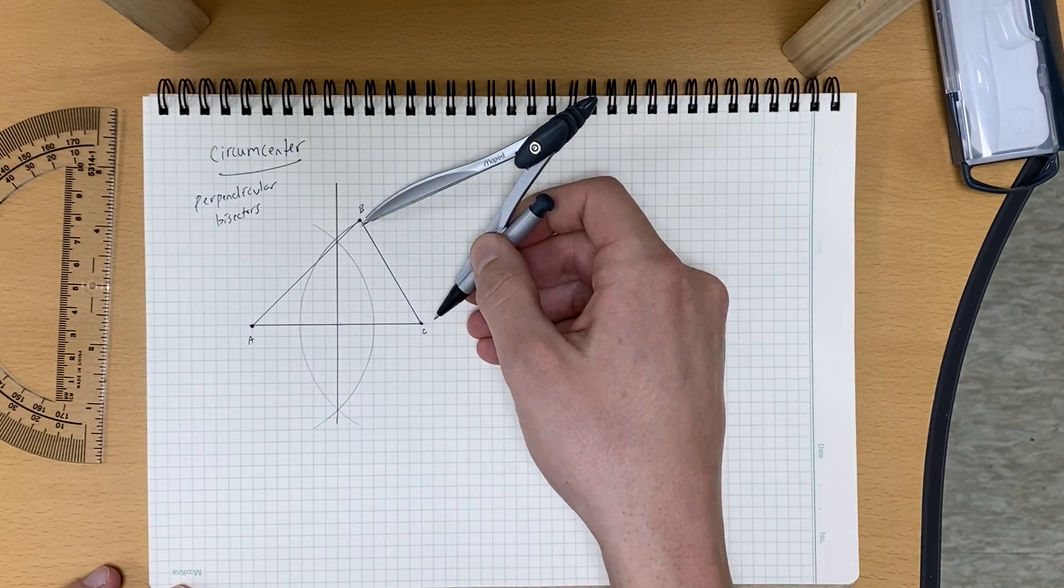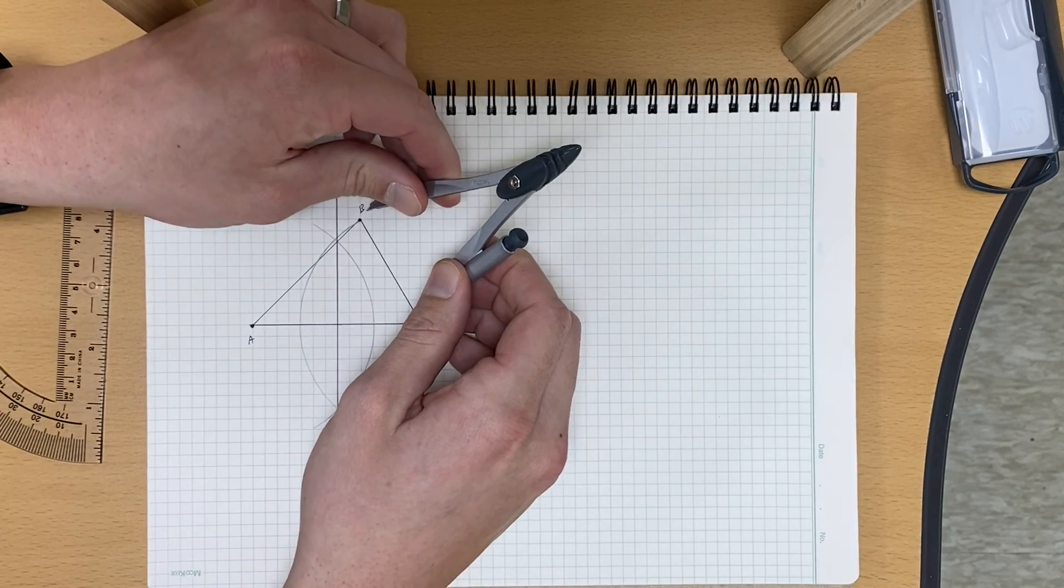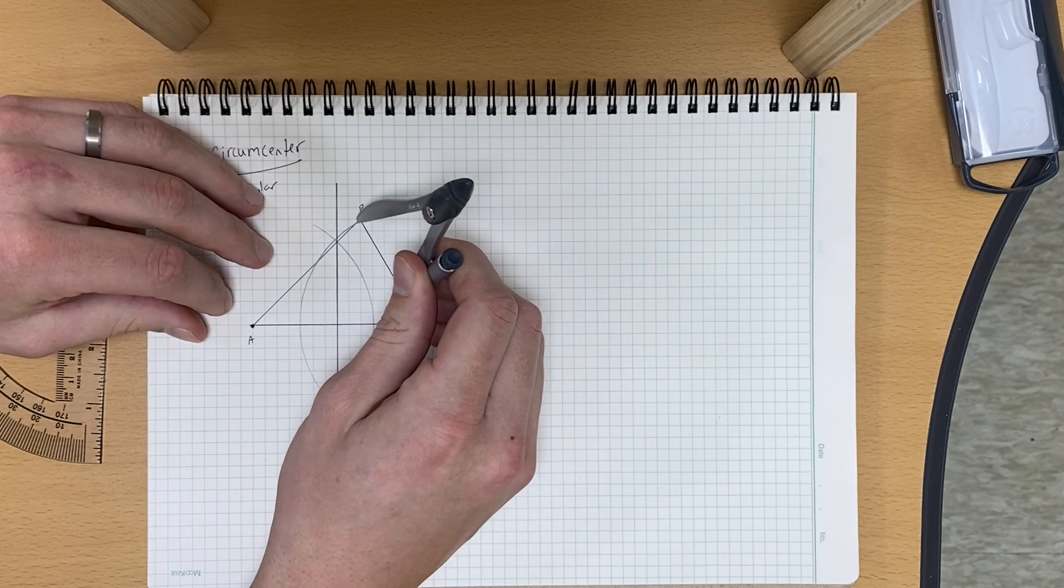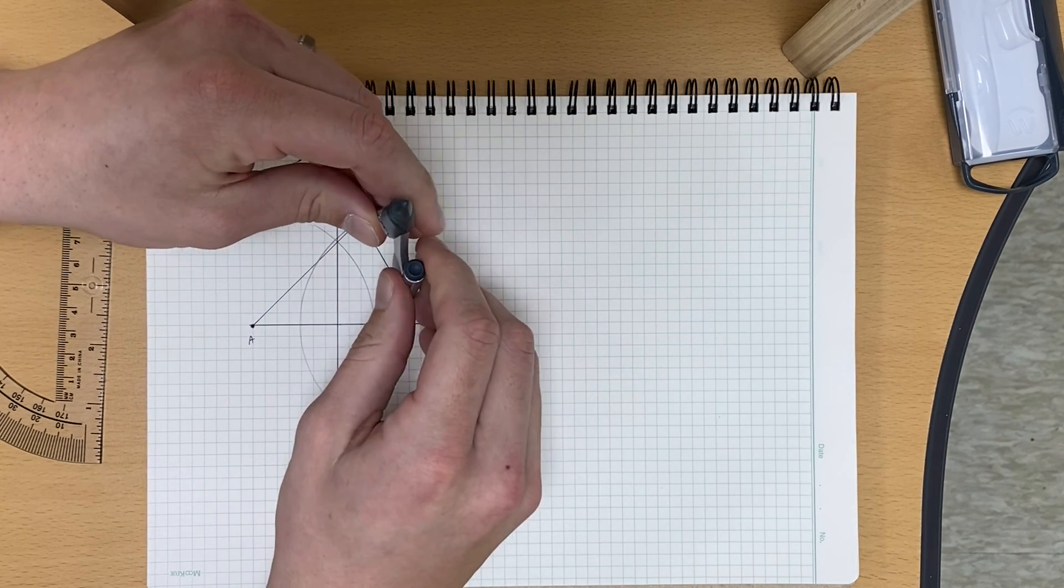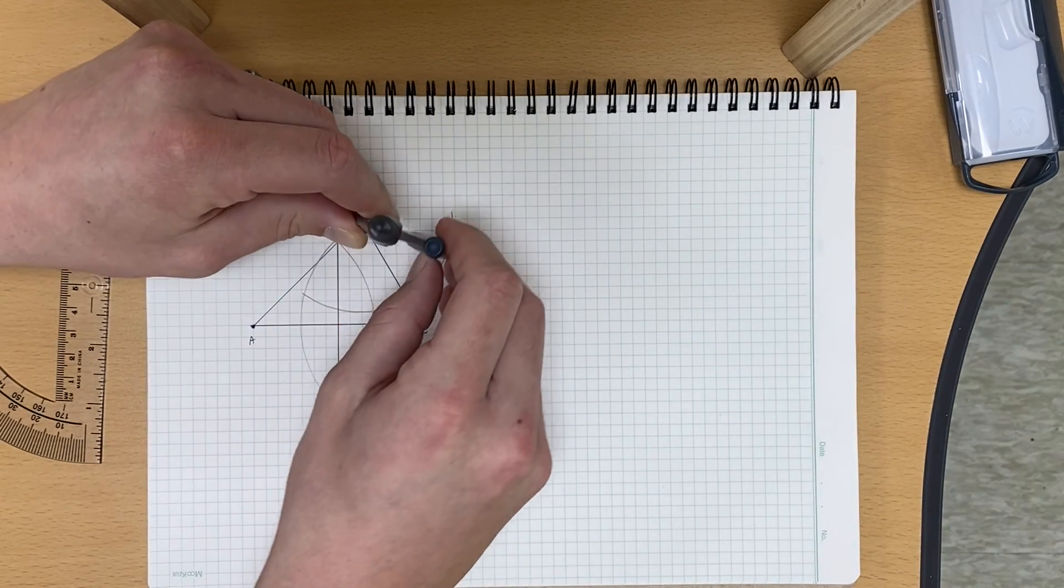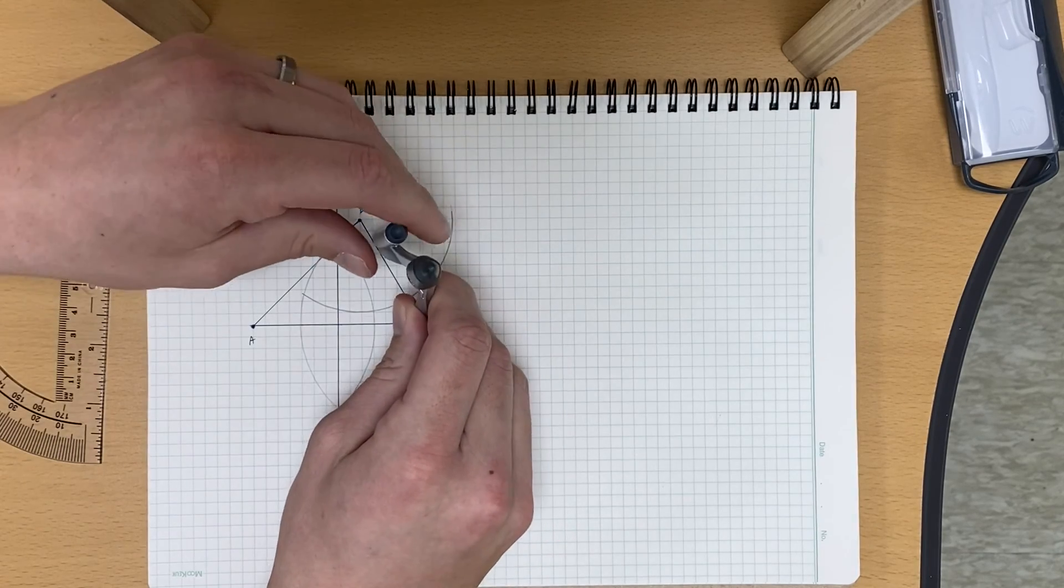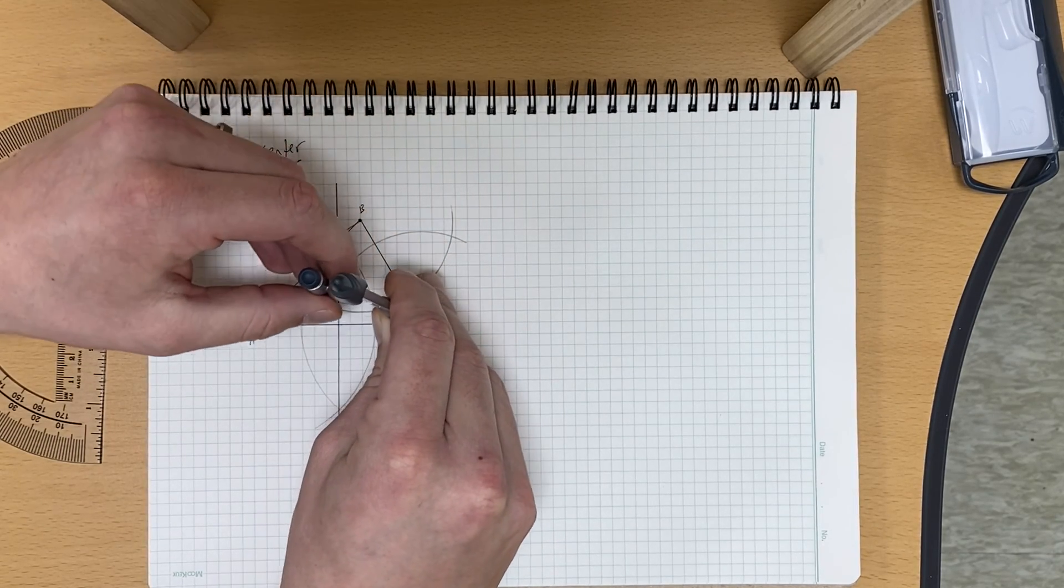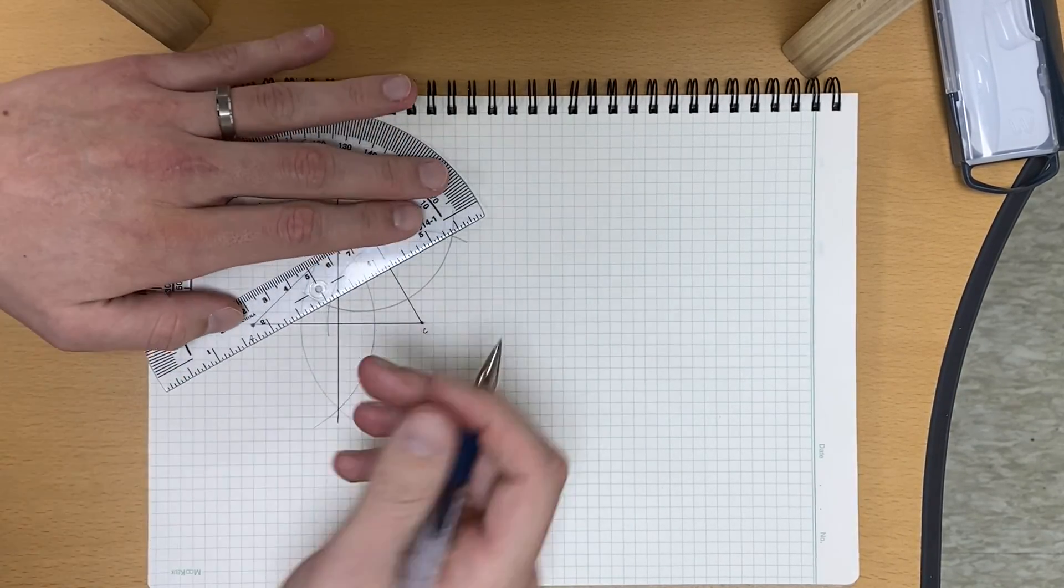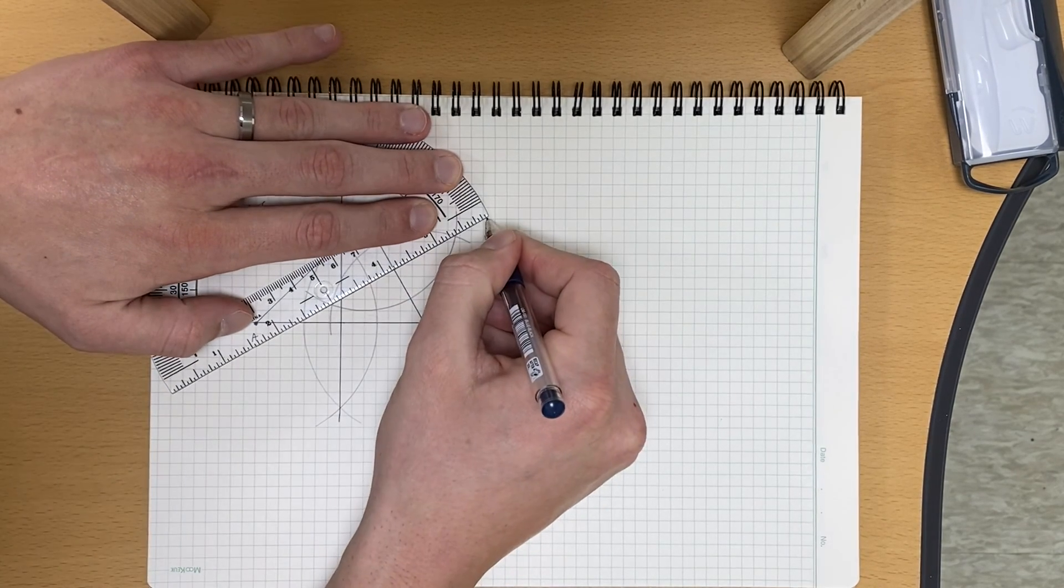So now let's do side BC. So for BC, let's put our compass needle at B, and I'm going to narrow it down just a little bit, and make sure it's just, the width is just more than half of the length. Now we put our compass at C, same openness, and we draw our arc here. All right, straight edge to connect our points of intersection. So about right there.